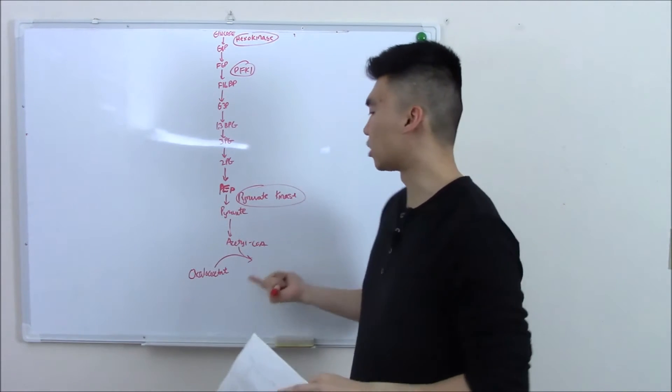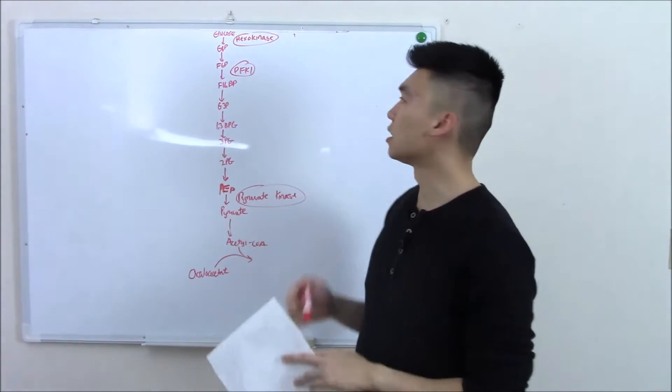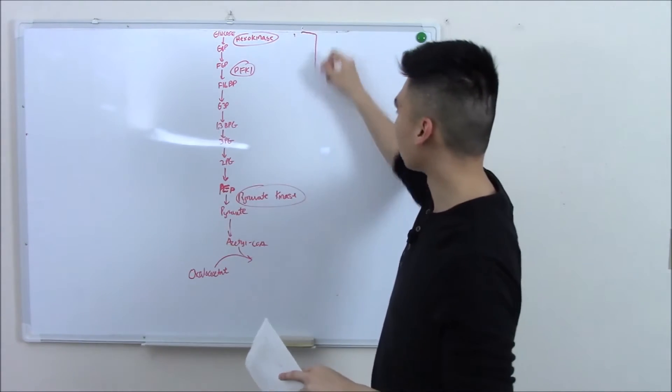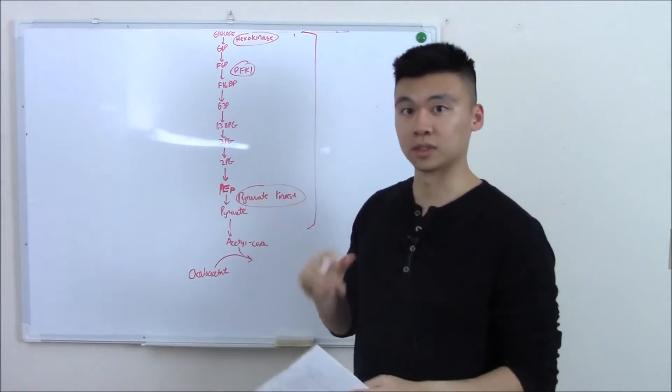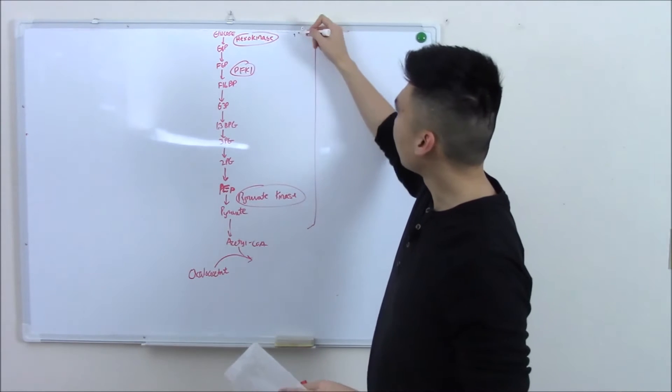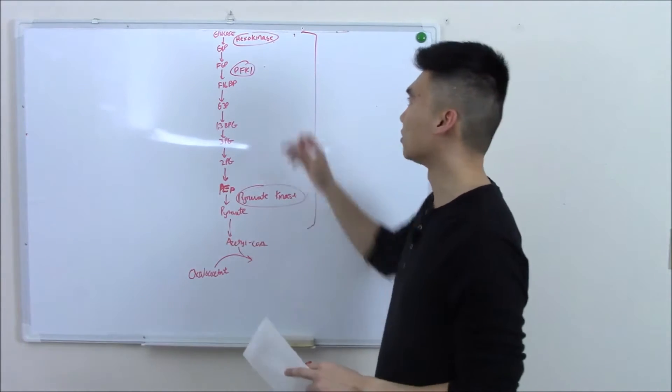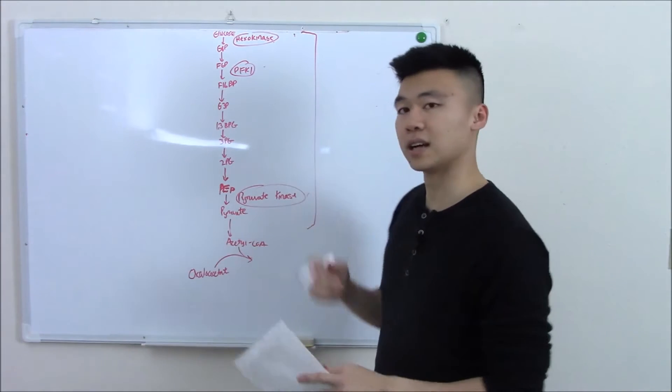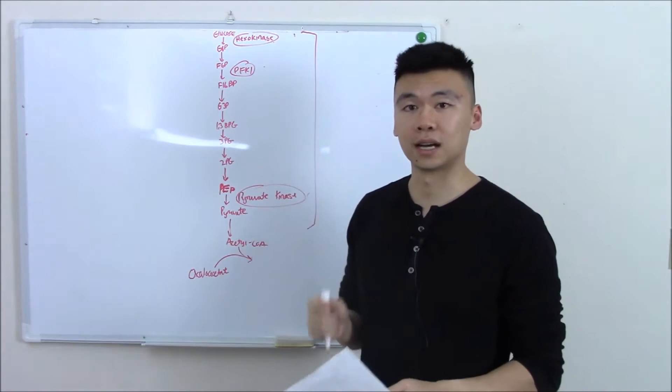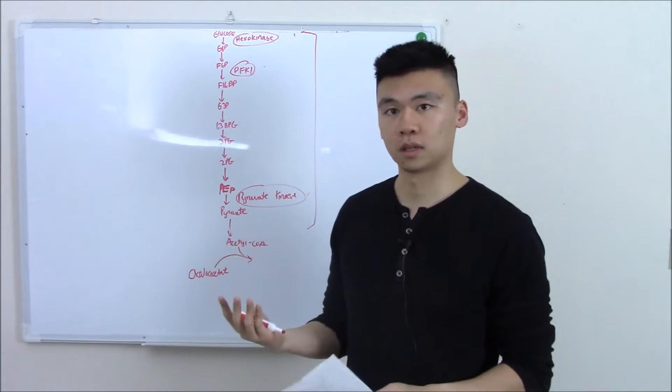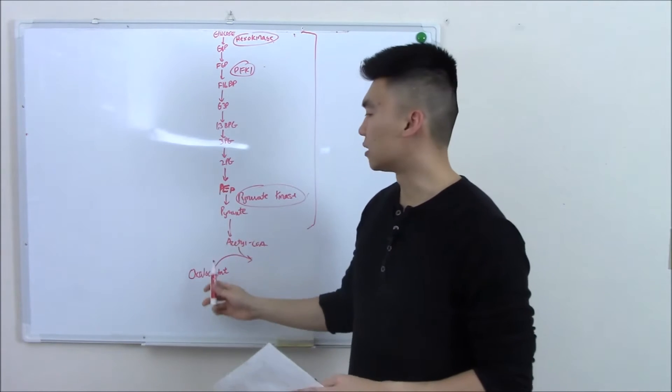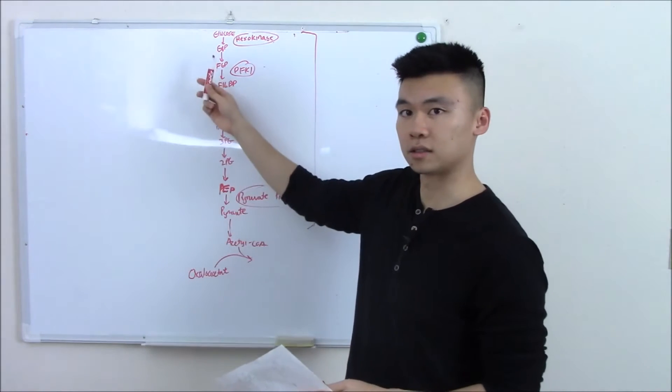Right here we have our nice glycolysis backbone. We will see these very important enzymes: hexokinase, PFK1, and pyruvate kinase. Not only are these important enzymes, but they're irreversible. So if we want to do gluconeogenesis and go in reverse, we're going to have to find a way to bypass these roadblocks.